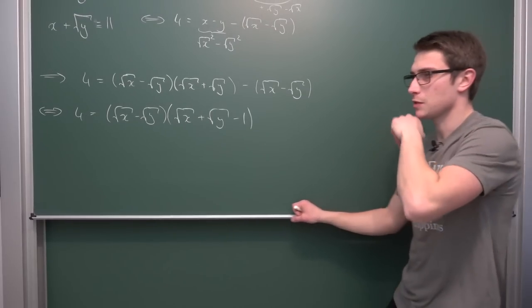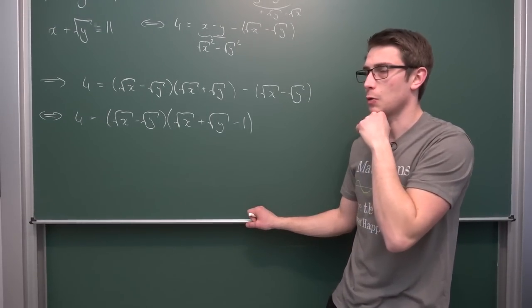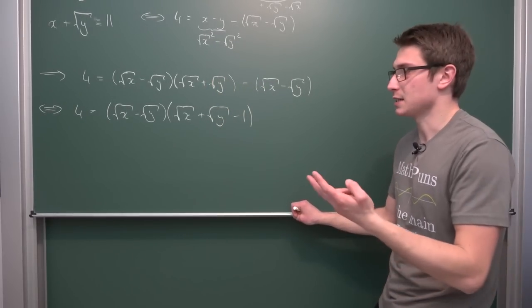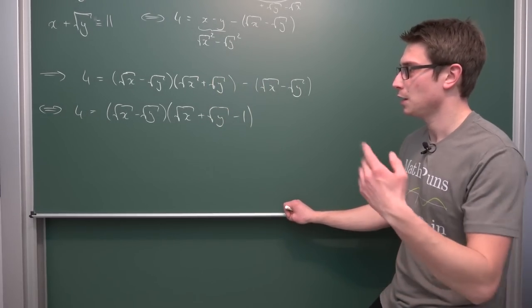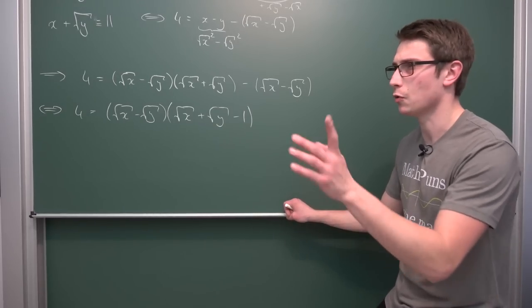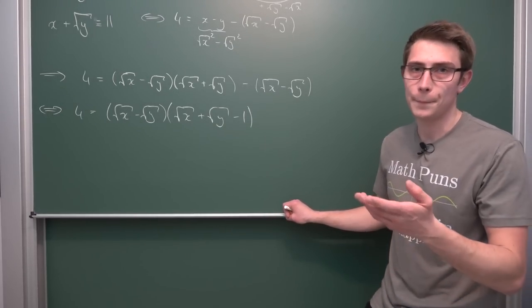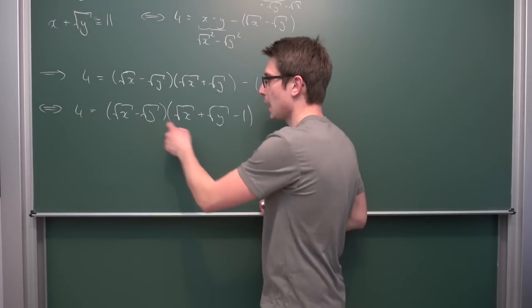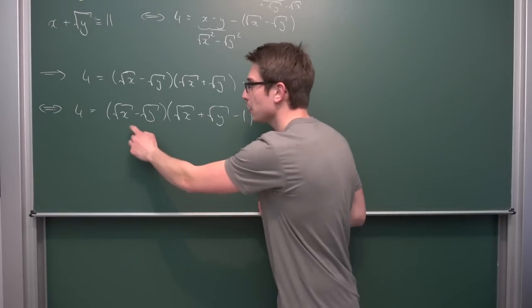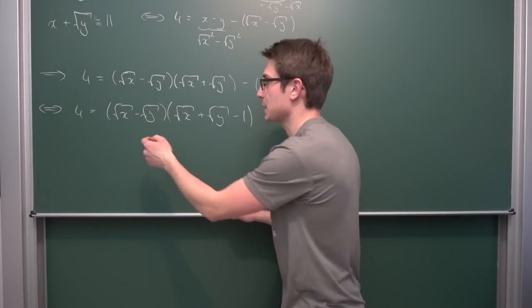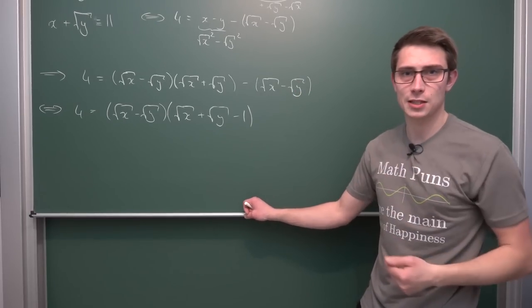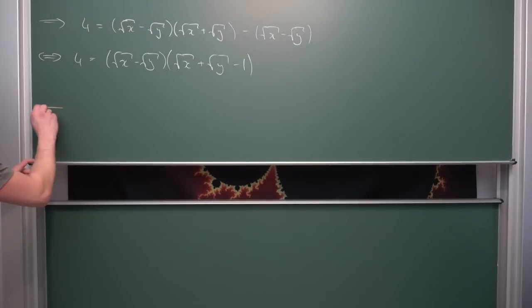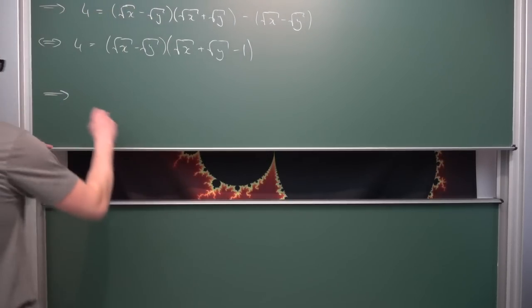Since the natural numbers make up a Gaussian ring, that means we can uniquely factorize the number four into linear factors, into a product of two things. The fundamental theorem of arithmetic holds here. How can we factorize the number four? Using two factors, it can either be one and four, or four and one, or the prime factorization two times two. We get three cases where two are symmetric.